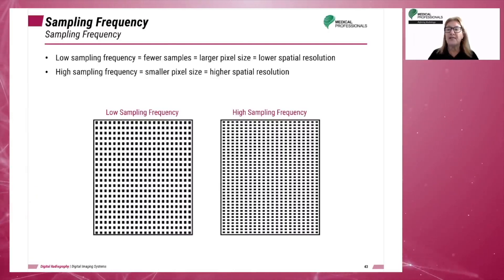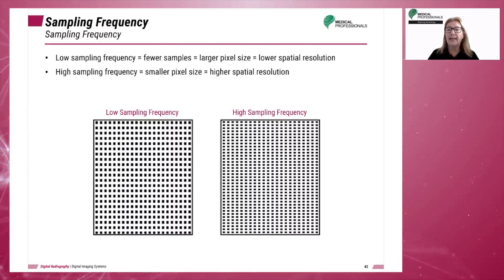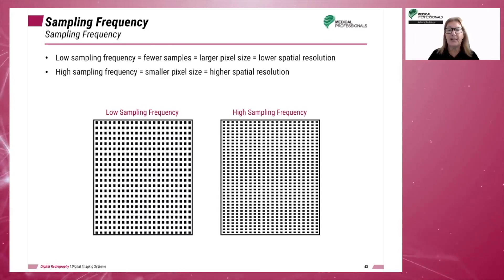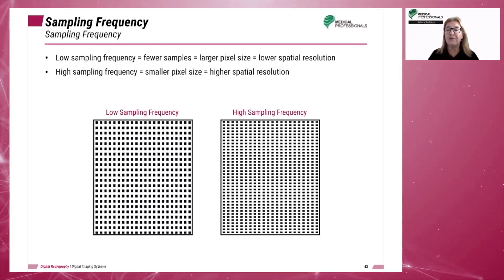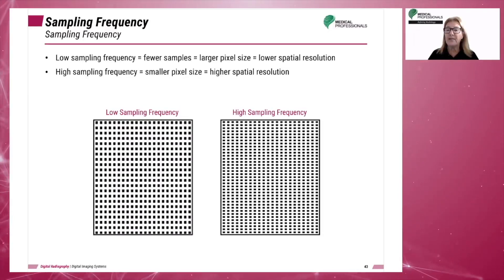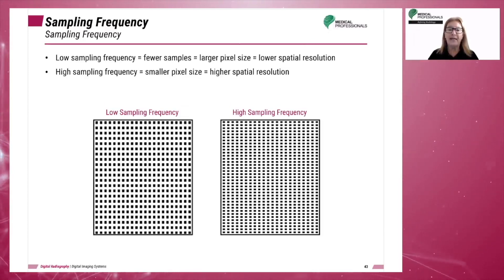Sampling frequency is the number of pixels sampled per millimeter. It controls spatial resolution in computed radiography. More pixels sampled means increased spatial resolution. However, sample frequency can change from vendor to vendor, varying from 5 pixels per millimeter to 20 pixels per millimeter. The choice of sample frequency is based on the plate size and you may be able to select that from the main menu.